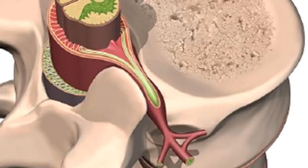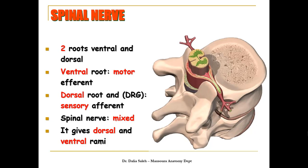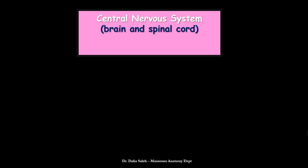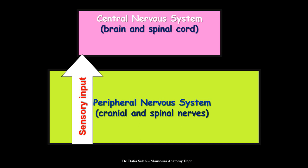The spinal nerve exits the vertebral canal through the intervertebral foramen and then splits into a dorsal ramus and a ventral ramus. The dorsal ramus contains mixed nerve fibers and supplies the skin and muscles of the back, while the ventral ramus contains mixed nerve fibers and supplies the skin and muscles of the anterolateral part of the body. To summarize: the central nervous system is formed of the brain and spinal cord, while the peripheral nervous system is formed of the cranial and spinal nerves.